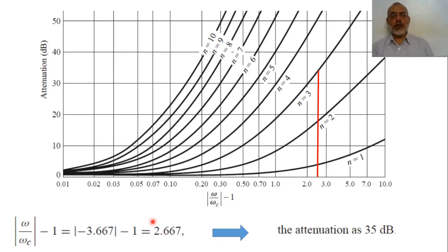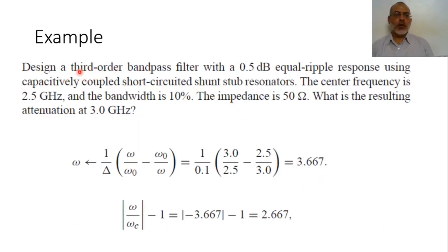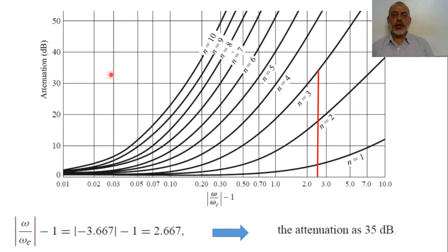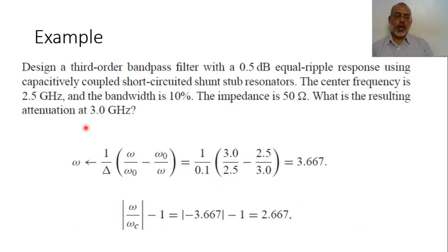From the chart of 0.5 dB ripple for the Chebyshev filter, we use the value of omega over omega_c minus 1 equals 2.66. Since we are using a third-order bandpass filter, N equals 3. Extending the line to N equals 3, we can see the attenuation at this frequency is around 35 dB. So the attenuation at 3 GHz would be around 35 dB.